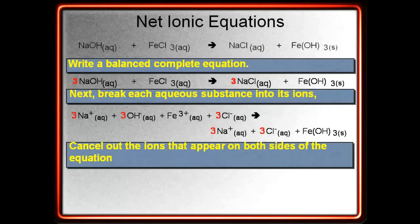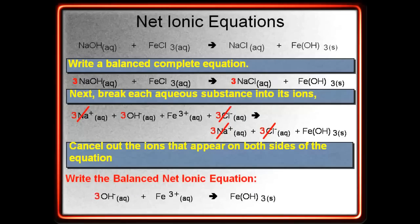Now, go through, cancel out the ions that appear on both sides of the equation. You have your sodiums on both sides and your chlorines on both sides. And then, write your balanced net ionic equation. So, 3 hydroxides will react with an iron-3 ion. And it will form an iron-3 hydroxide solid. Remember to take your coefficients with you. After you cancel out your spectator ions, any coefficients left on ions in that reaction need to come down to the balanced net ionic equation.